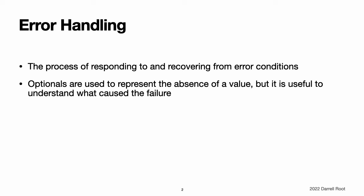Some operations are not guaranteed to always complete execution or produce a useful output. Optionals are used to represent the absence of a value, but when an operation fails, it is often useful to understand what caused the failure so that your code can respond accordingly.